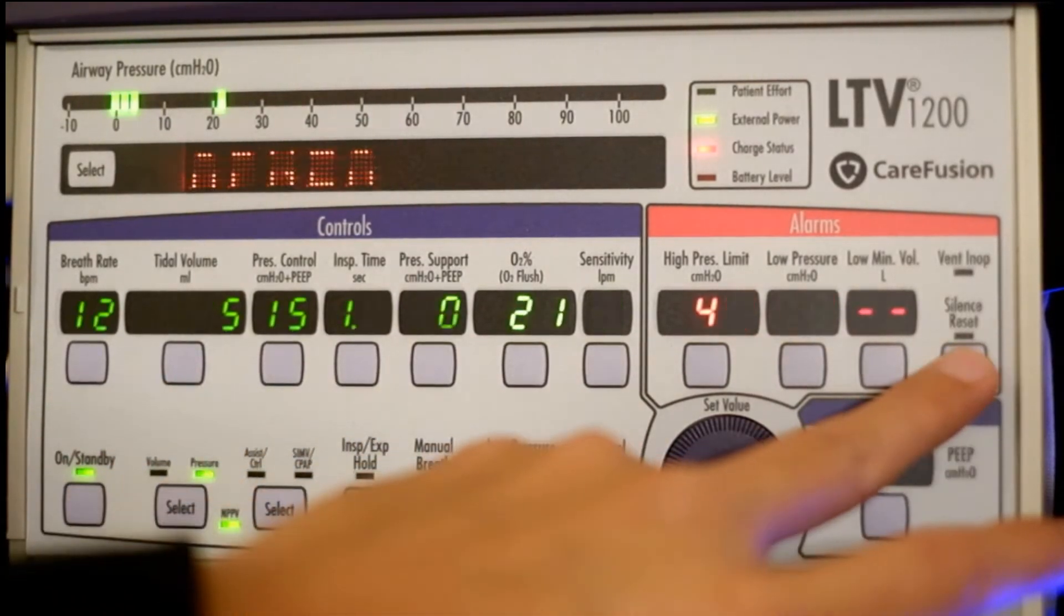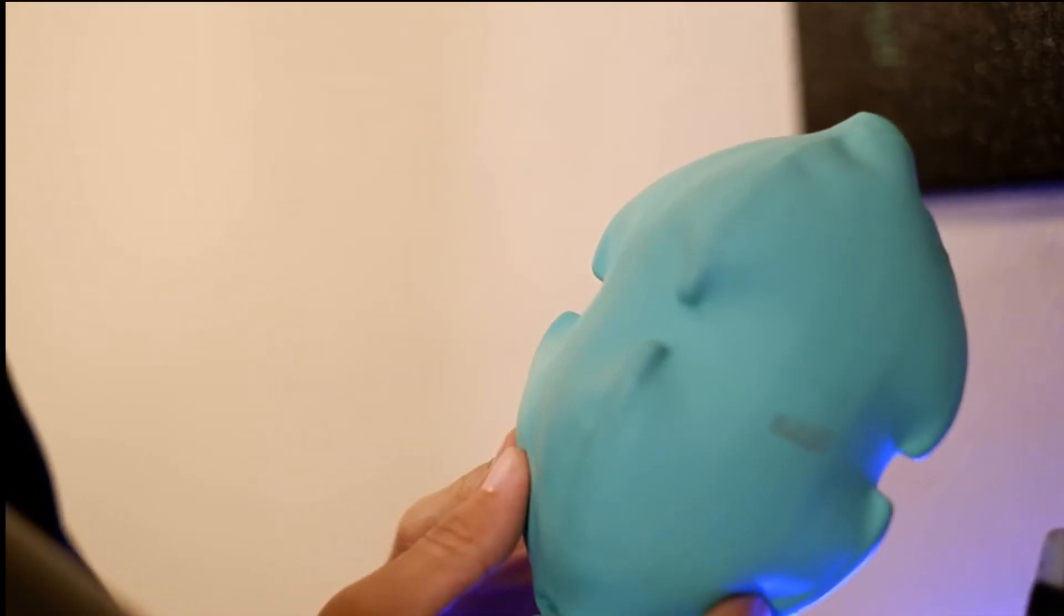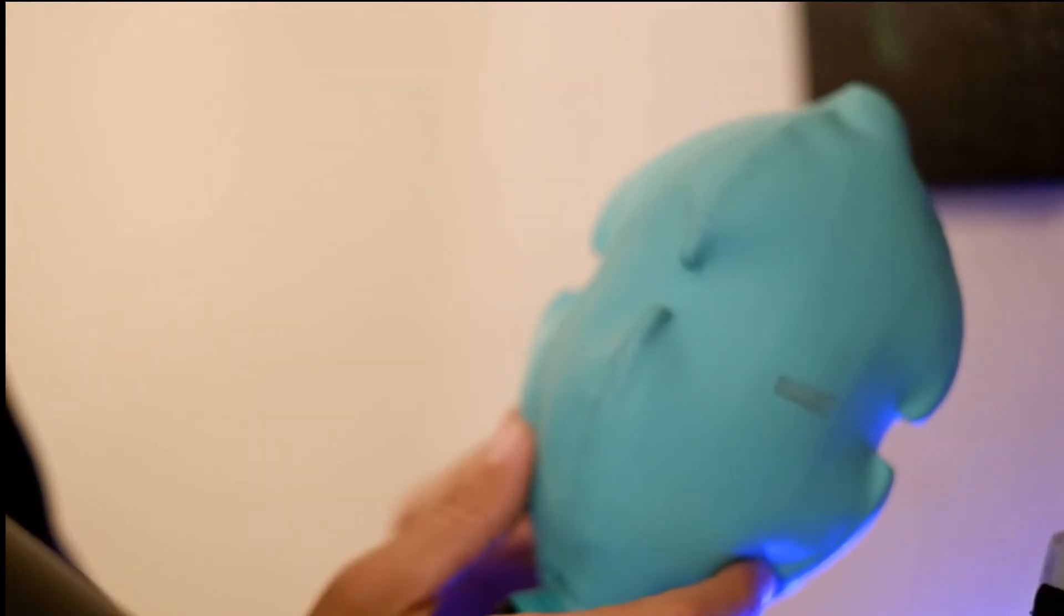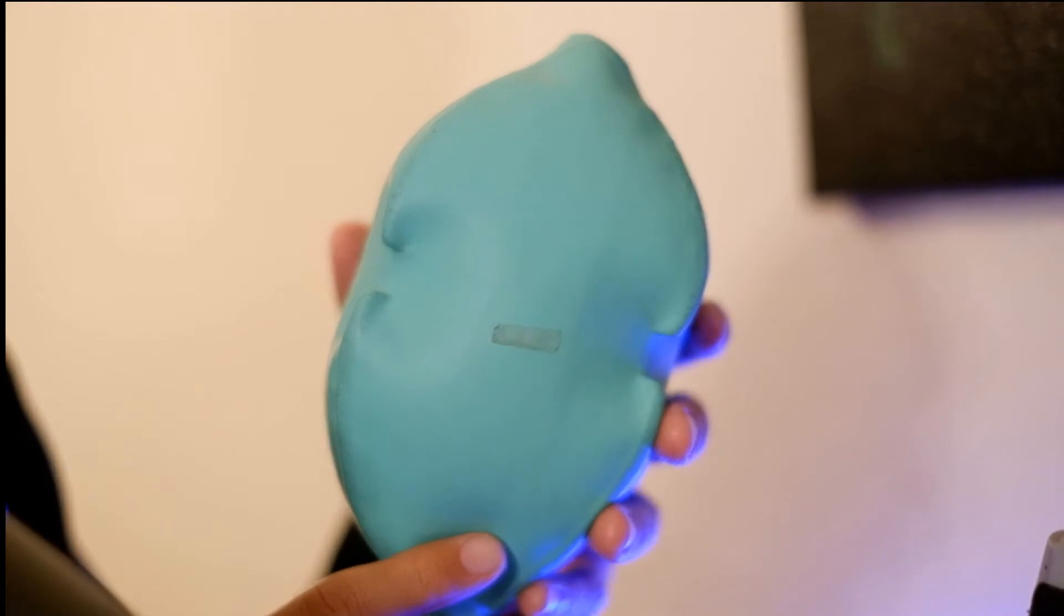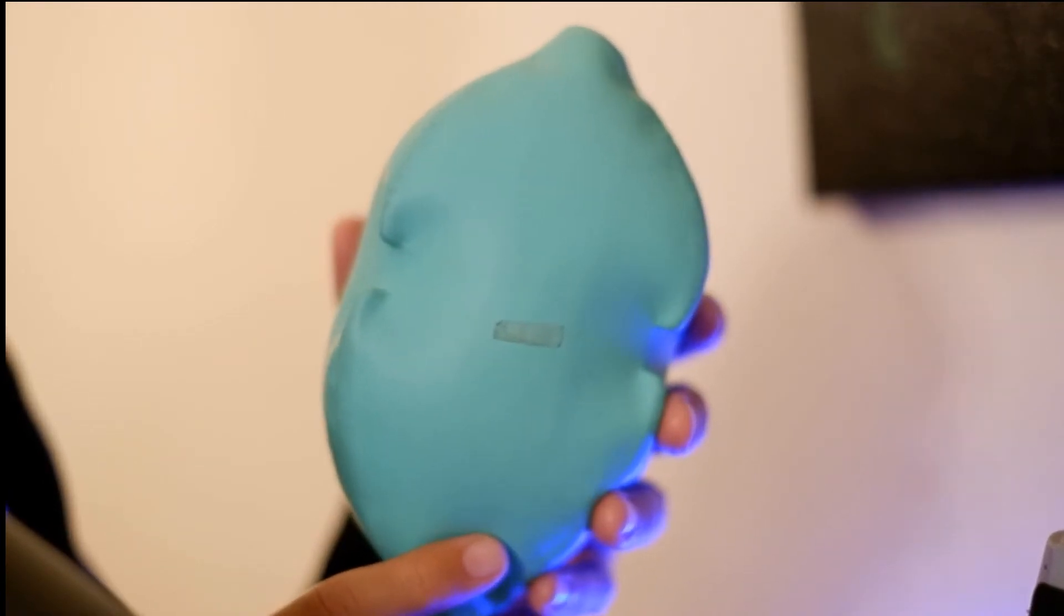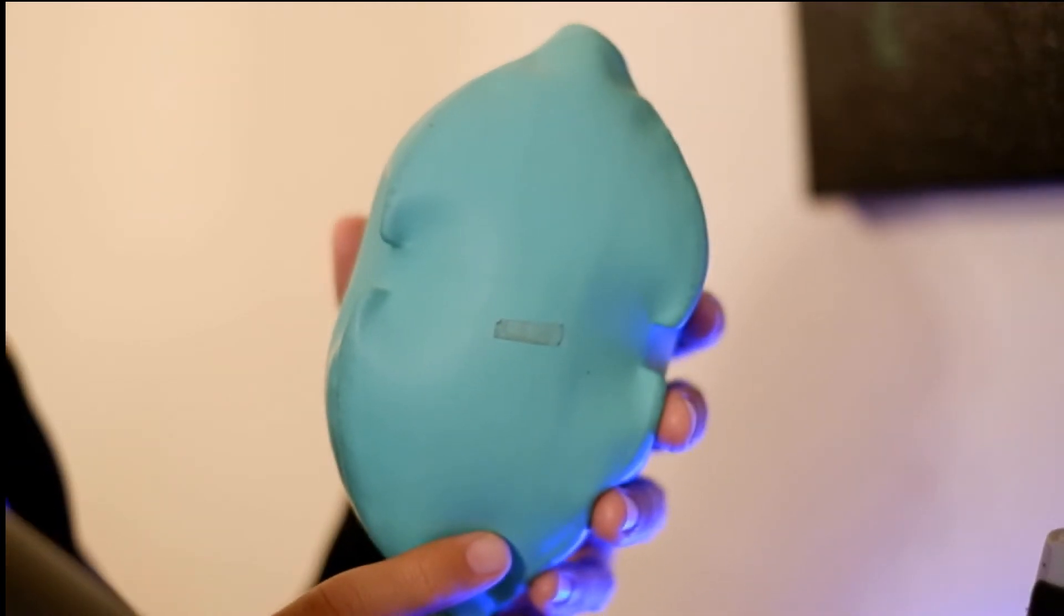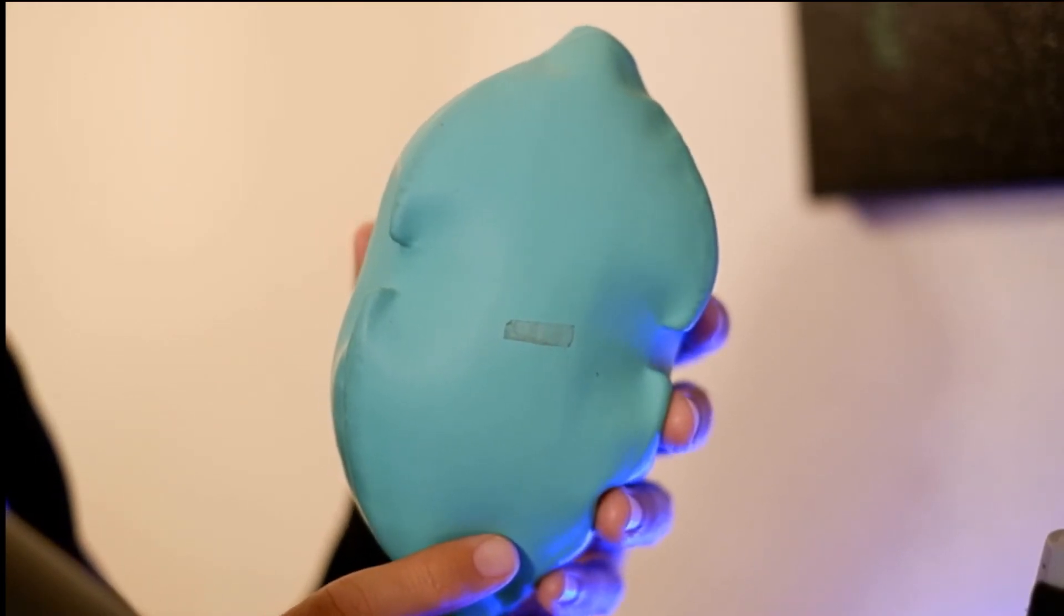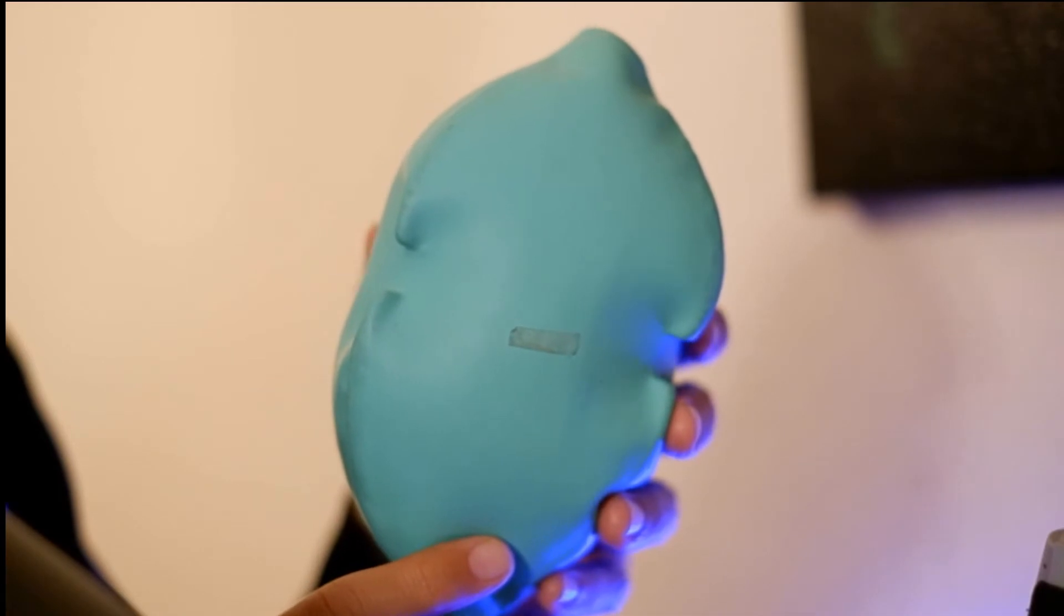Got an apnea alarm because it didn't sense breathing. So this balloon, this test lung, is kept open because of the PEEP. The pressure support comes into place when we take a breath. Watch. If you hear the machine, right now there's no noise, no effort from the machine, no pressure support because we didn't breathe. So when the patient breathes, it helps out with the breath.